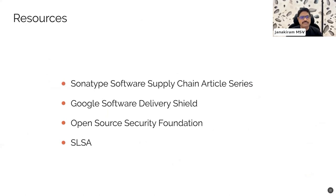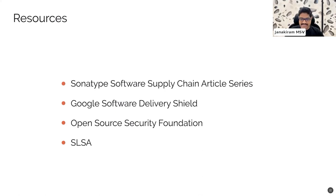I strongly recommend you take a look at the Sonatype software supply chain article series — I borrowed a lot of concepts and graphics from their tutorial. It's a fantastic resource. Also the Google Software Delivery Shield — the demo was based on that. And the Open Source Security Foundation, which is the body that defines best practices for securing open source, and SLSA, which we just reviewed. That brings us to the end of this session. I hope you found this useful. One line takeaway: securing the software supply chain is everyone's responsibility. It starts with the developer, it ends with the operations engineer, and it is an iterative, continuously evolving process. Make sure you are following best practices all the way from writing your first line of code to deploying the application.